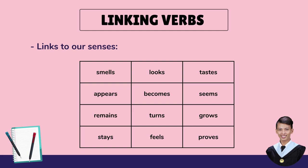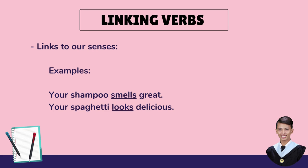Let's have an example. Your shampoo smells great. The one we're talking about here is shampoo, and our linking verb is the word smells. There is no action nor movement — it's just declared that your shampoo smells great. Next: your spaghetti looks delicious. Our linking verb here that connects the subject spaghetti and the adjective delicious is the word looks. Neither action nor movement is happening. This sentence just simply declared that your spaghetti looks delicious.